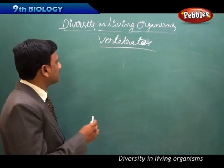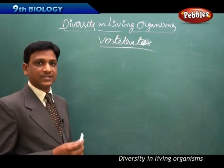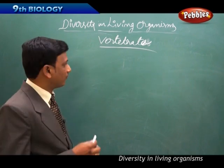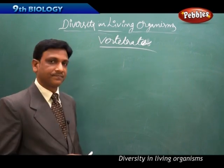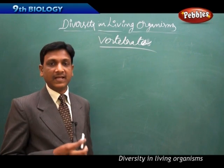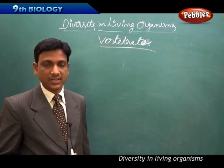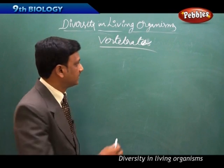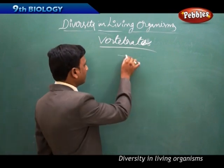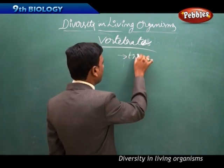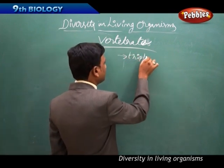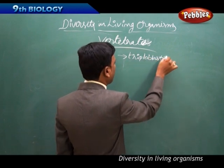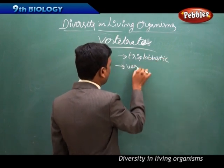The last phylum in the animal kingdom is Vertebrata. Vertebrates are well-developed animals. They are triploblastic in nature and have a true vertebral column.